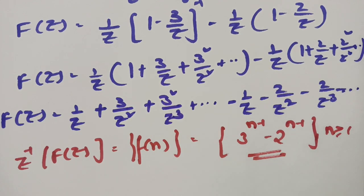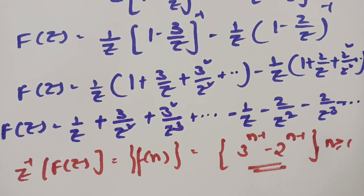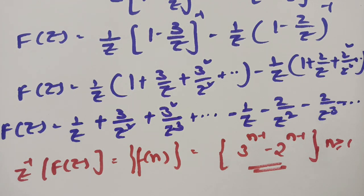This is how we find the region of convergence. A key tip: whichever value is greater — Z or the pole — we take that one as the common factor, and then proceed to find the inverse Z-transform. Thank you for watching.